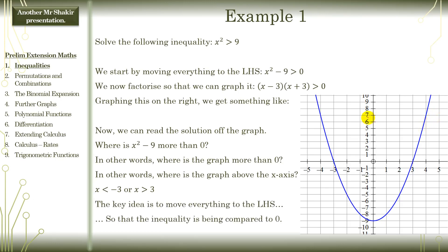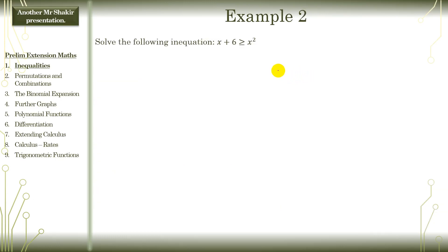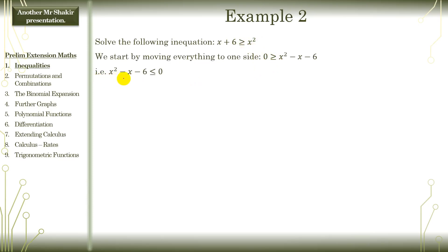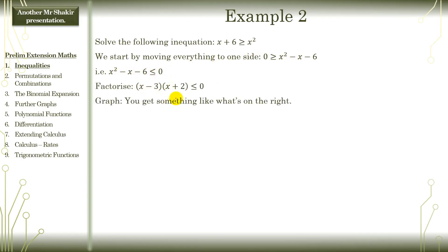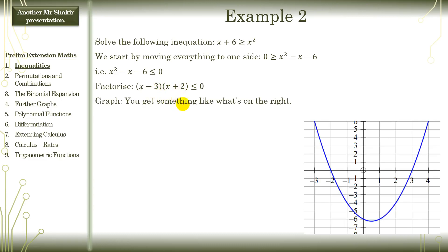Now, the key idea — remember — is step one: move everything to the left-hand side and make sure you are comparing to zero. Example two: let's say we have to solve this. We move everything to one side so zero is on the other side — all I've done is put the expression to the left-hand side without actually changing anything. Then factorize and graph. We know the zeros — very straightforward. Where is it less than zero? Between negative 2 and 3 — we can see where the graph is below the x-axis: between negative 2 and 3.